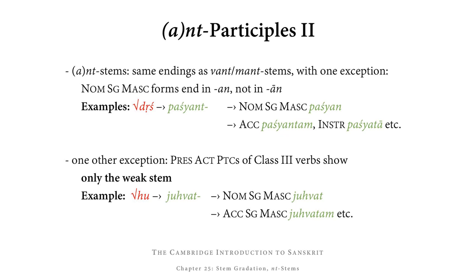The nominative singular masculine of the present active participle ends in an, and so does the nominative singular masculine of the future active participle. There is one other exception, which concerns not the endings but the stems: ant-participles and nt-participles have the exact same stem gradation as want/mant stems, with the exception of the present active participle of class 3 verbs, which only ever show the weak stem. For example, from hu (a class 3 verb meaning 'to pour' or 'to sacrifice'), we have the stem juhvat — juhu (the weak present stem of hu) plus the weak suffix at, never the strong suffix ant. So we get juhvat, and from that the nominative singular masculine juhvat, accusative singular juhvatam, and so on.